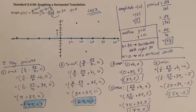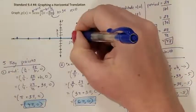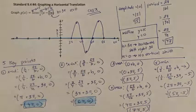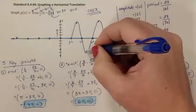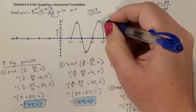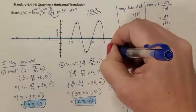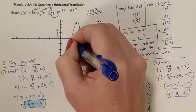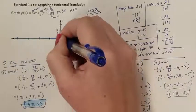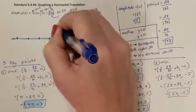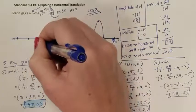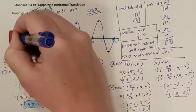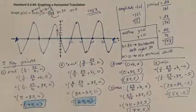Starting from the first max at 3 pi, I connect the curve: up at 5, down at 5, up at 5, down at 5, continuing the pattern until I run out of space. So there is my cosine function.